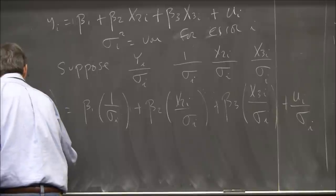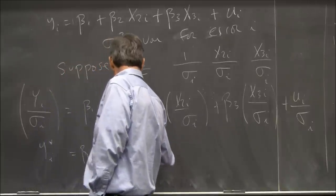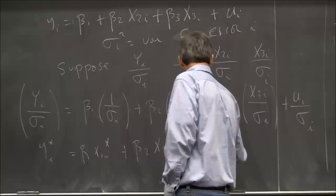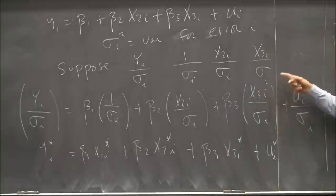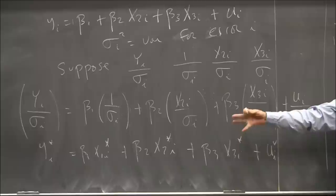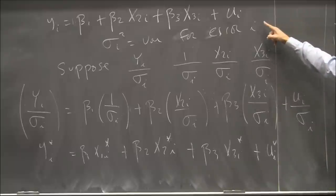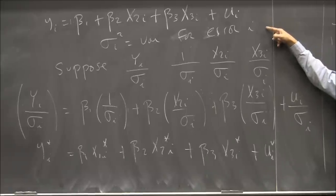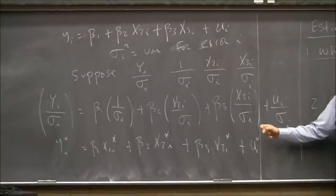We'll call this regression the star model: yᵢ* = β₁x₁ᵢ* + β₂x₂ᵢ* + β₃x₃ᵢ* + uᵢ*. In our spreadsheet we'd form these new variables — for example, x₃/σ. We'd run this regression on the transformed data with the stars. The original model is not BLUE because we have heteroscedasticity. This transformed model is BLUE — we'll get the best linear unbiased estimate of the betas because we no longer have heteroscedasticity.